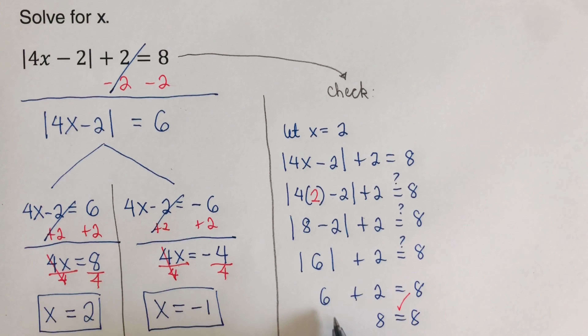Step three: use the original equation to check our answers. We start with x = 3: rewrite the original equation 3|2x - 4| - 1 = 5, change the variable to parentheses, and plug in 3. We get 3|2(3) - 4| - 1 = 3|6 - 4| - 1 = 3|2| - 1 = 6 - 1 = 5. It checks out.